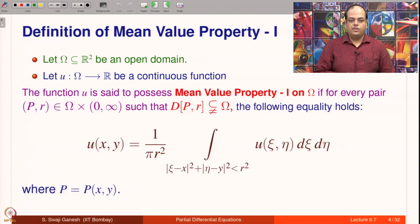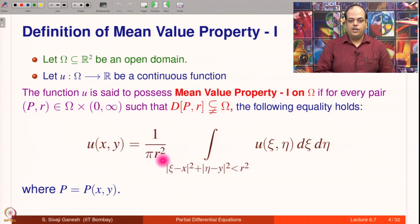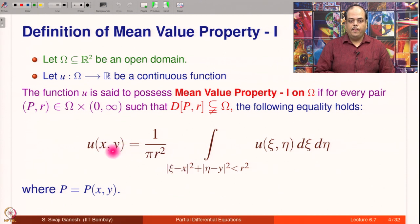Then the following equality holds: U of P equals the integral of U over the disc D(P,R) divided by π r², which is precisely the area of the disc. That means I am integrating the function on D(P,R) and dividing by its area — this is the mean value. In other words, the value of U at the center of a disc is given by its average on the disc.